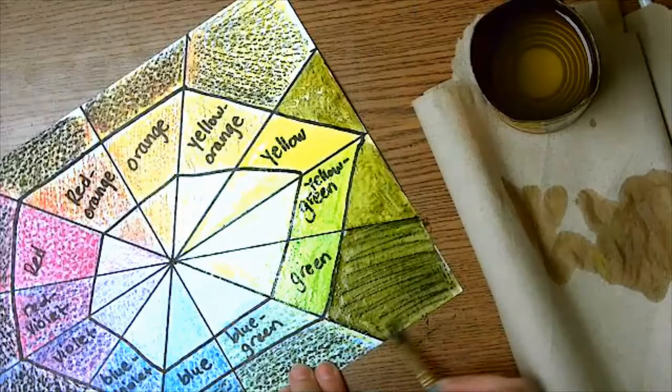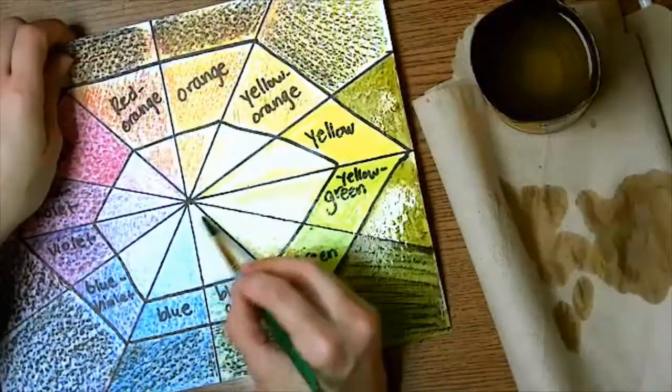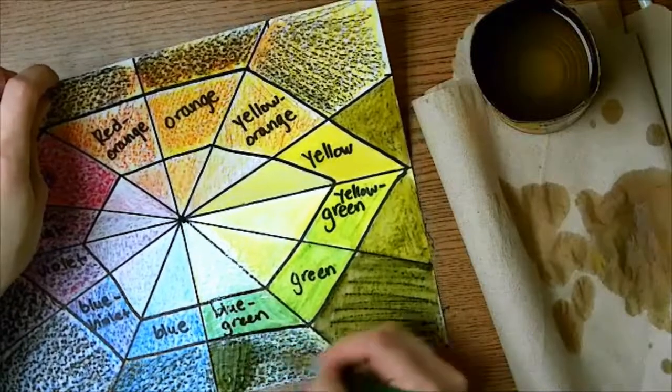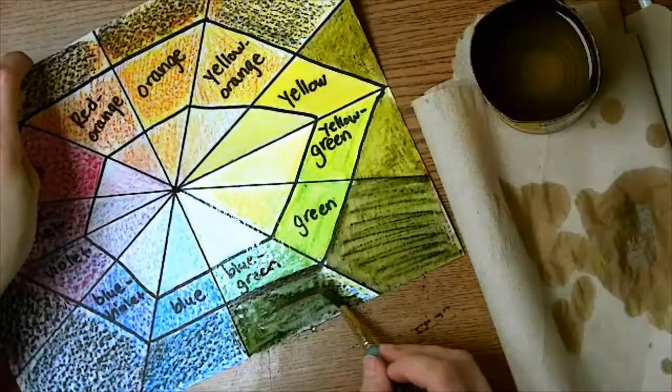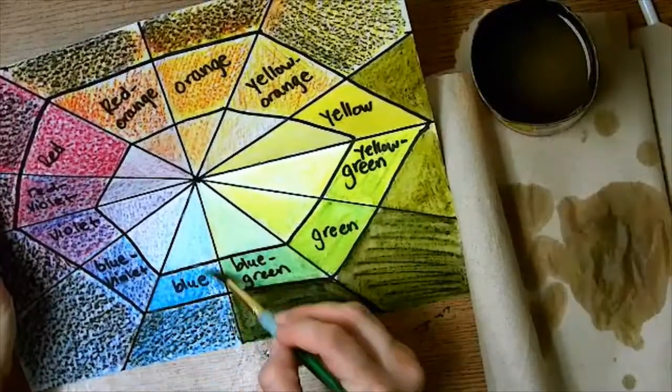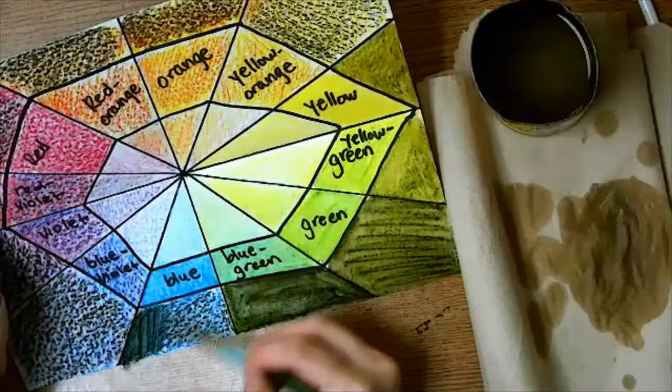You notice after I change pie pieces, I wash my brush out. I always start with the tint, then I do the hue, and I do the shade last because the black one will dirty up your other colors. So anytime you blend a shade together, you should always wash your brush out.